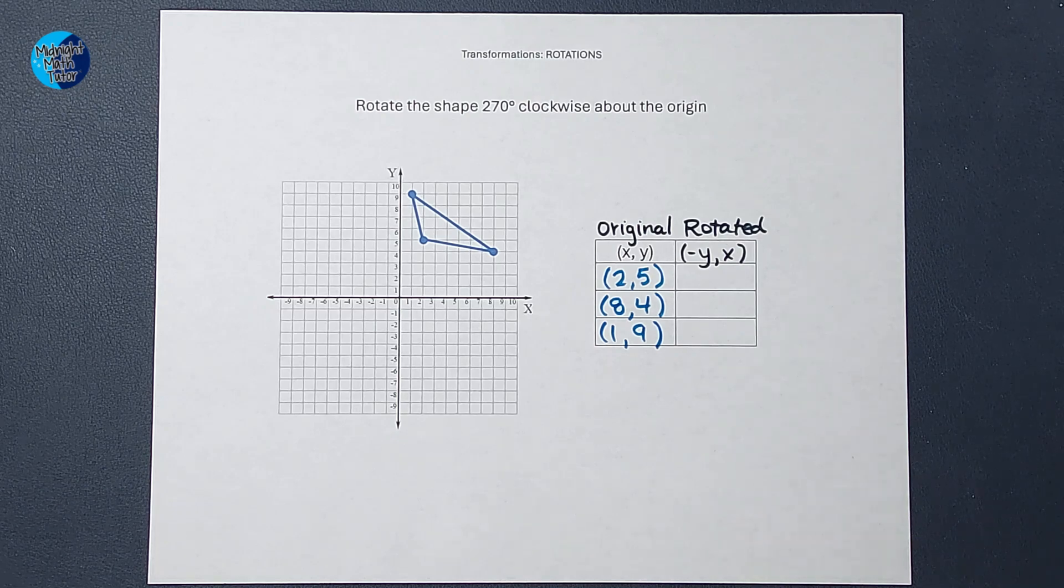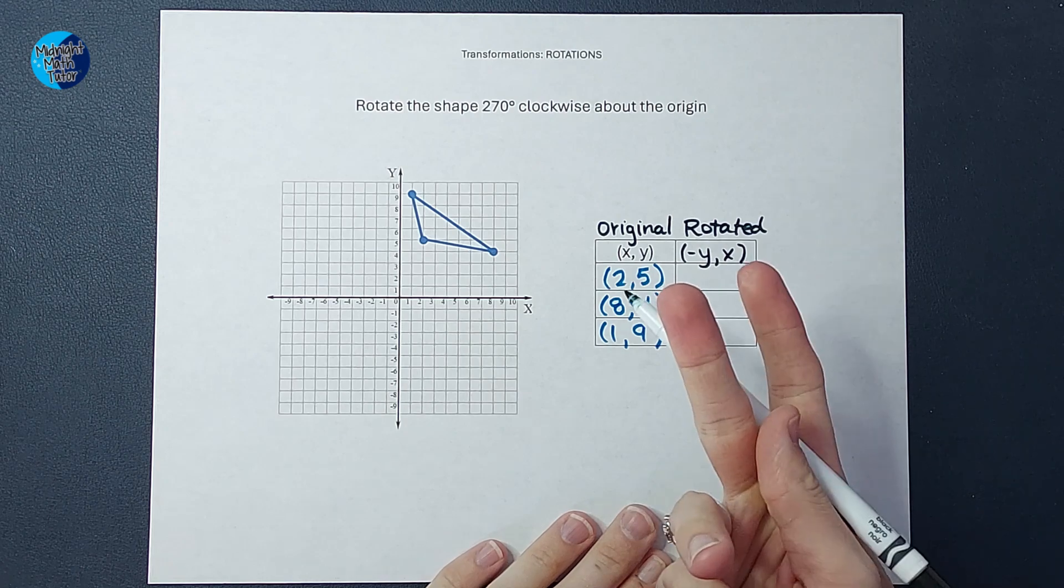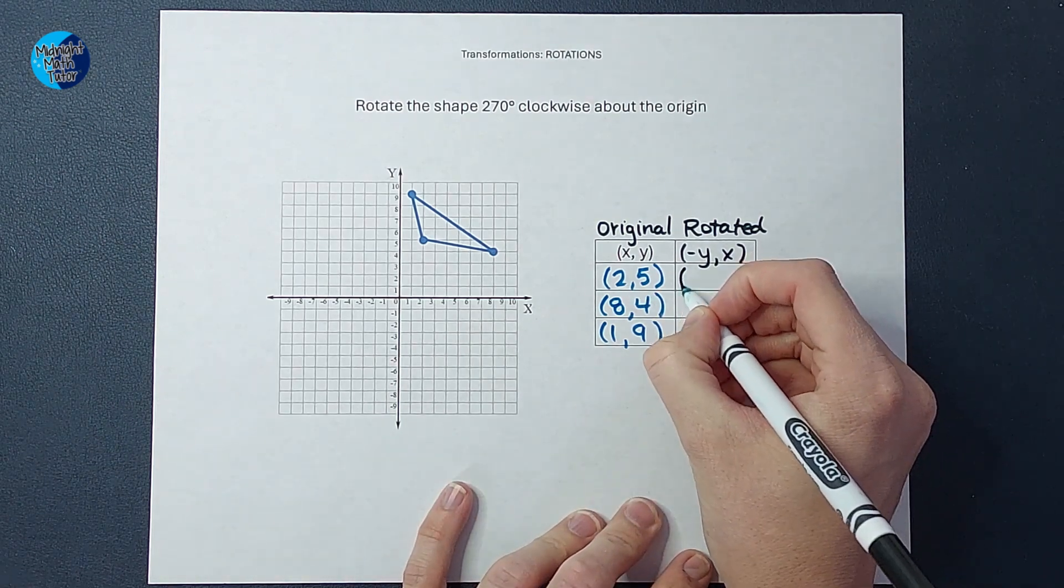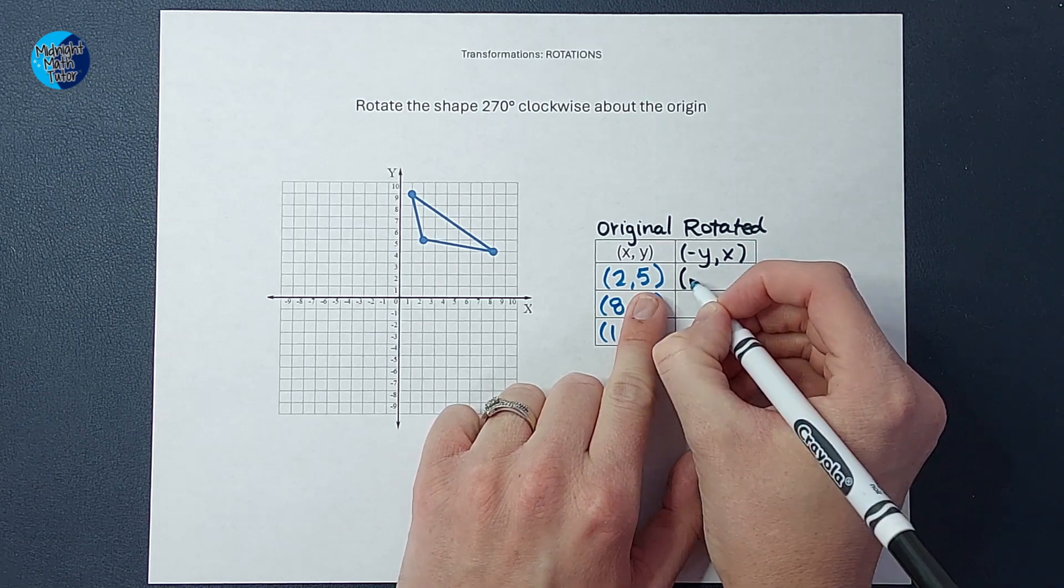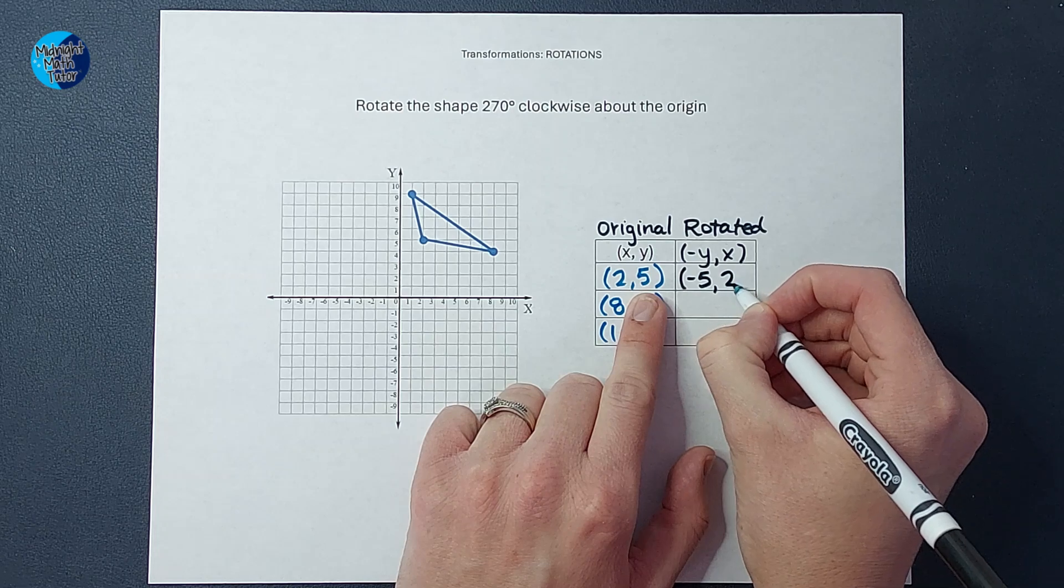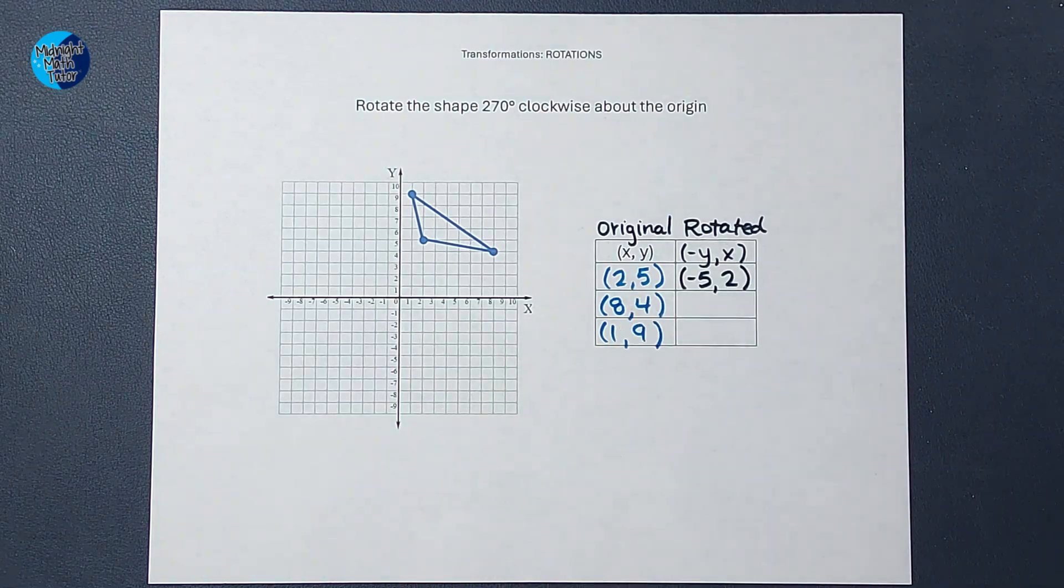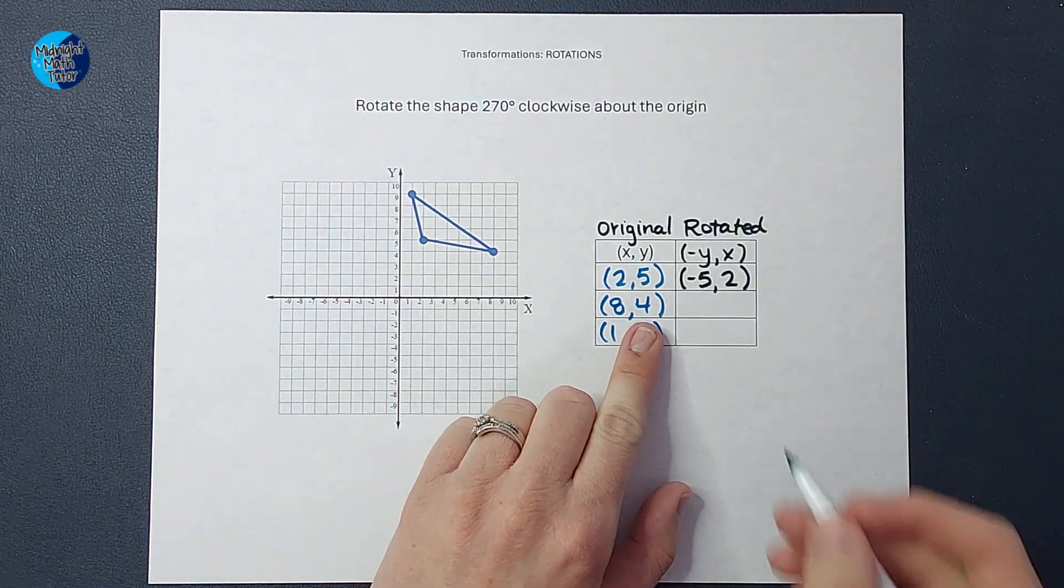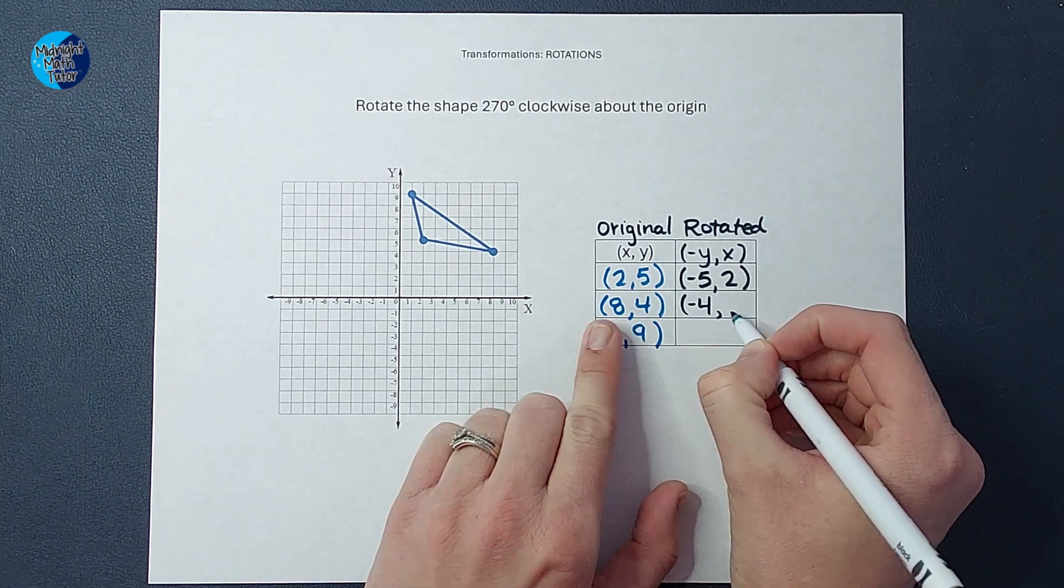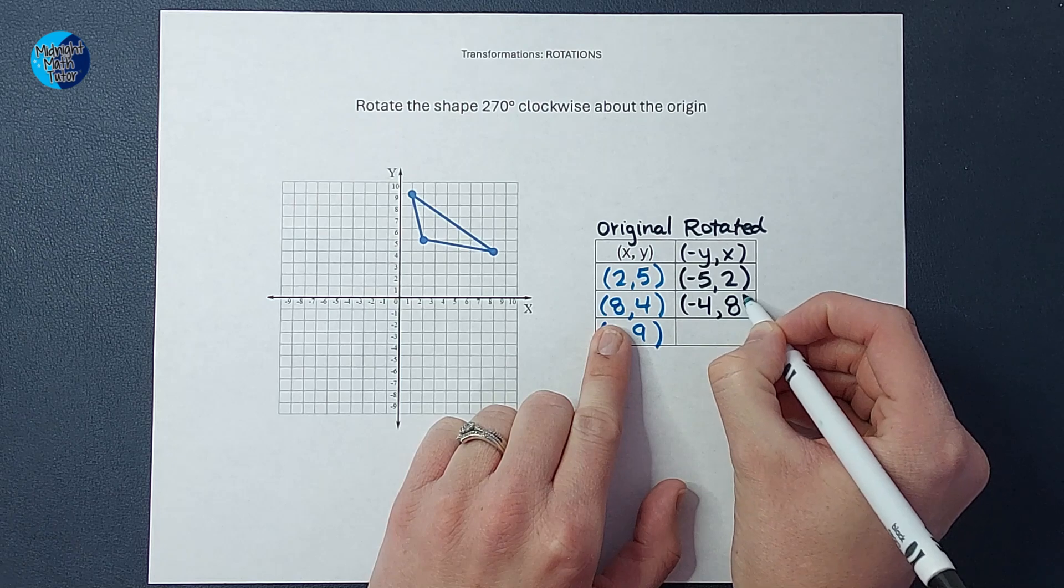Now I am going to swap them and change Y's sign. So I'm going to write Y first and change its sign. So it's going to be negative 5, 2. Then I'm going to write Y first again, change its sign. So it's negative 4 and write 8, 2.